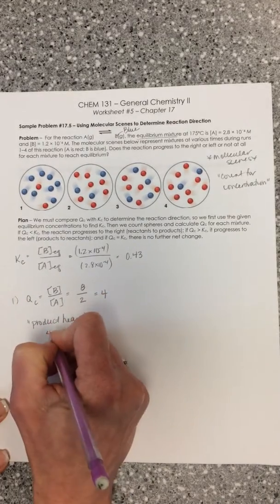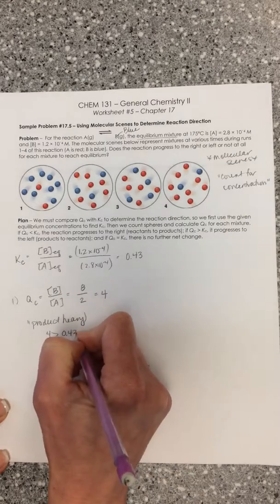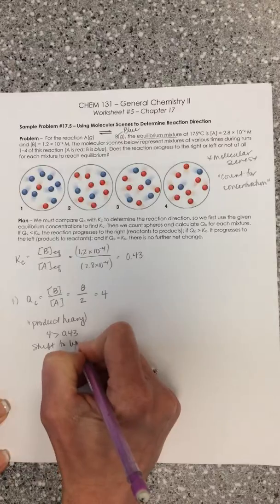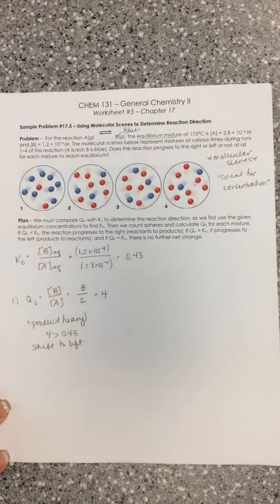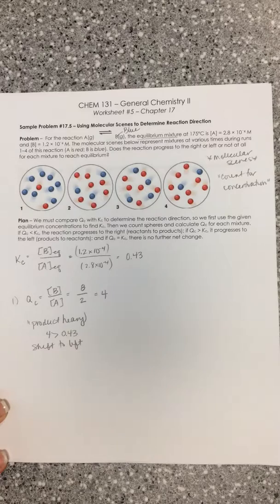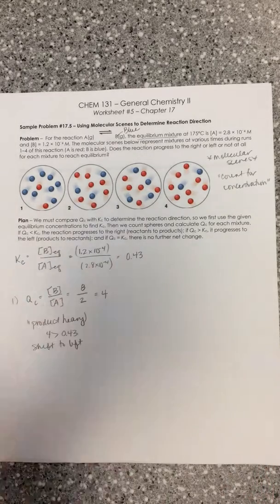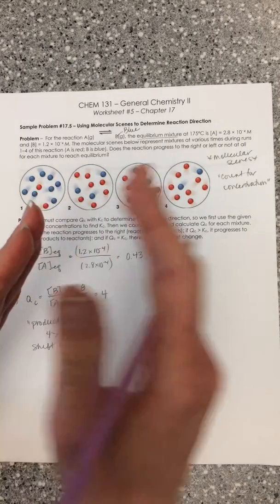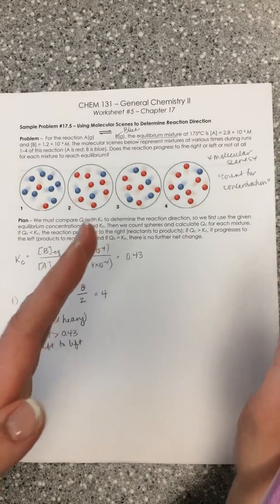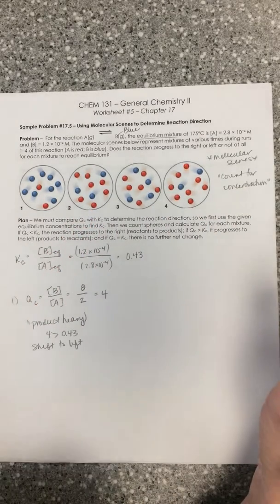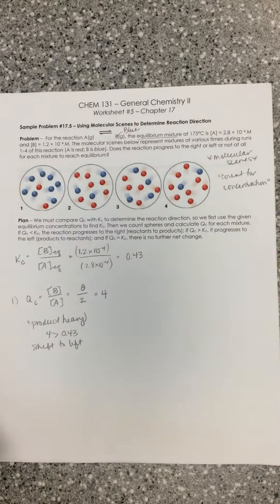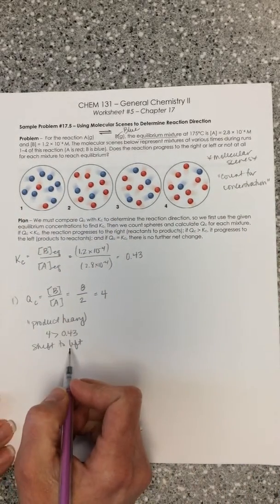So if you're product heavy, four being greater than 0.43, what you need to do is shift to the left in order to remedy that problem. And you might remember, we talked about kind of a number line method, where if K represents a point on the number line where you want to be, if Q is greater than K to the right of K, that means you're more on the product side than you're supposed to be. The way to fix that is to take some of those products and convert them back into reactants, which means your reaction has to shift back to the left.